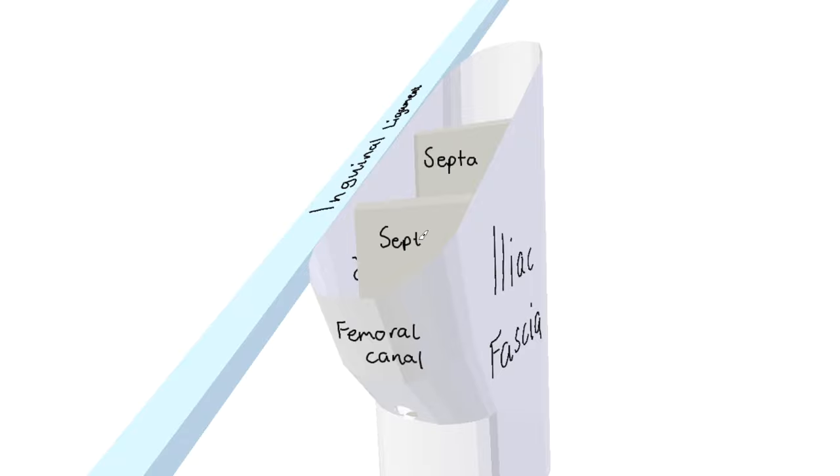Within the femoral sheath is the femoral artery, femoral vein and femoral canal, each separated by these septa or partitions.